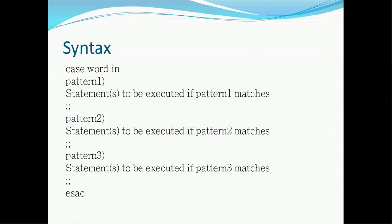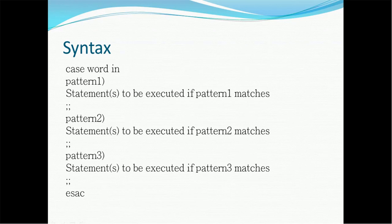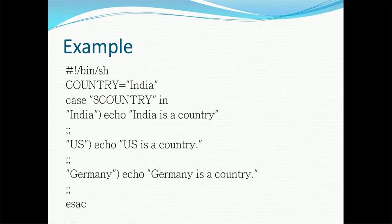The syntax is: use 'case' as a keyword, then the word, then 'in', then a pattern followed by the logic to execute when that pattern matches, then double semicolon (;;). You can write pattern 2 with its executable statement, pattern 3 with its executable statement, and so on for n number of patterns. End with 'esac'. For example, we define a variable with the value 'India', then check 'India' as a pattern — if it matches, echo 'India is a country'. Similarly we check 'US', 'Germany', and their corresponding logic, ending with esac.